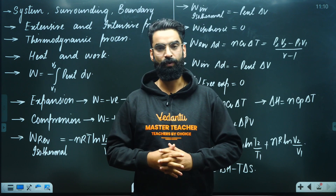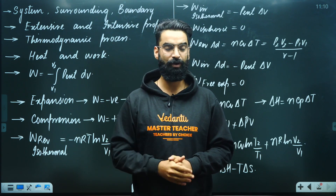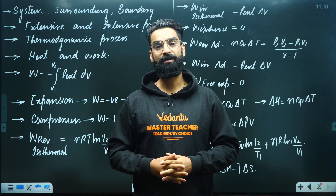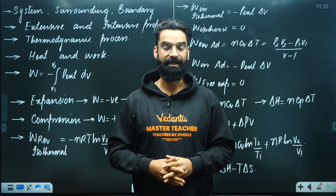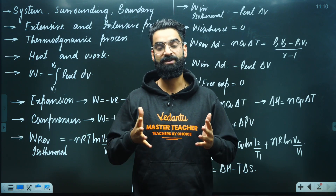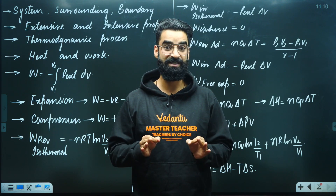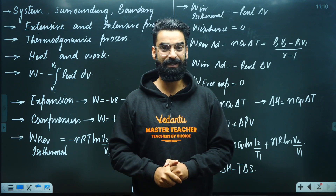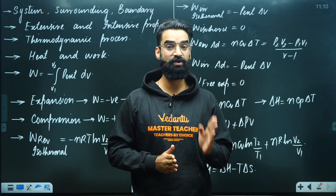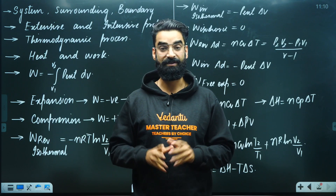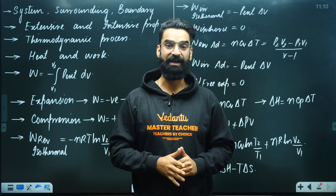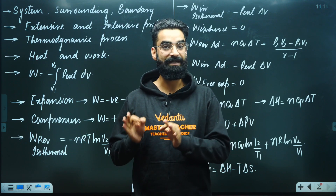For an isochoric process, when an ideal gas undergoes an isochoric process, volume is kept constant, ΔV = 0, which means work = 0. For free expansion of an ideal gas — expansion against zero external pressure, or expansion in vacuum — since it is always irreversible and P_external = 0, work in free expansion is also zero. Free expansion is of two types: isothermal free expansion and adiabatic free expansion. Do remember: an isothermal free expansion of an ideal gas is always adiabatic in nature, and an adiabatic free expansion of an ideal gas is always isothermal in nature.